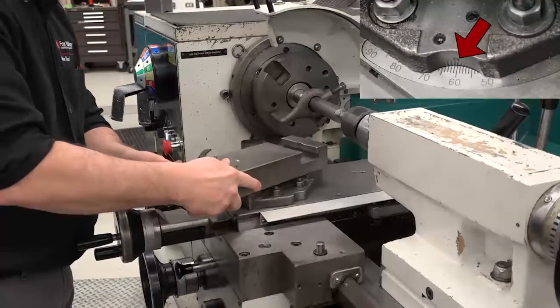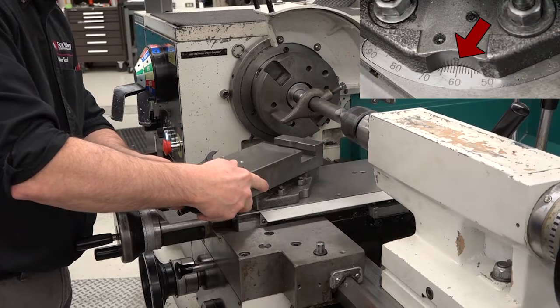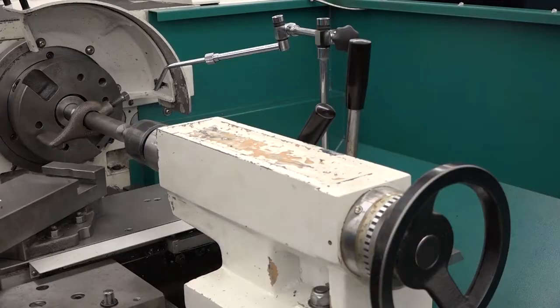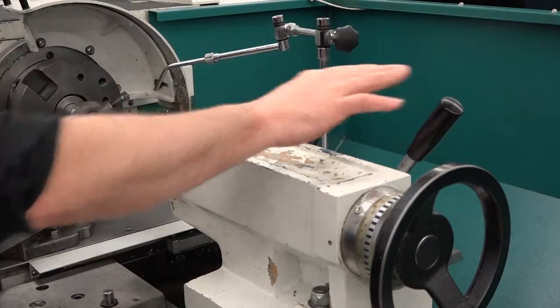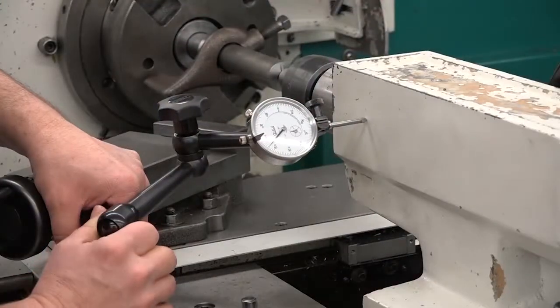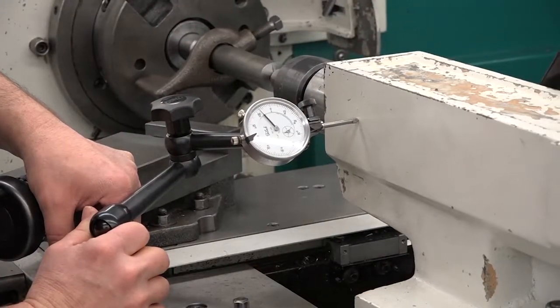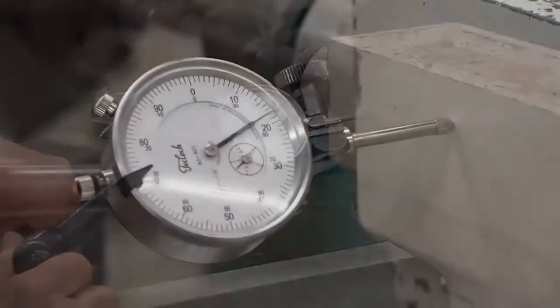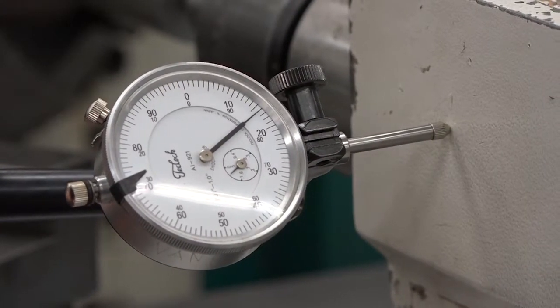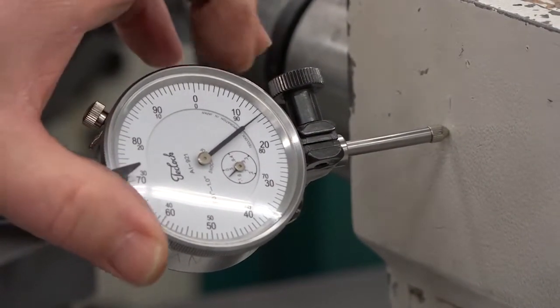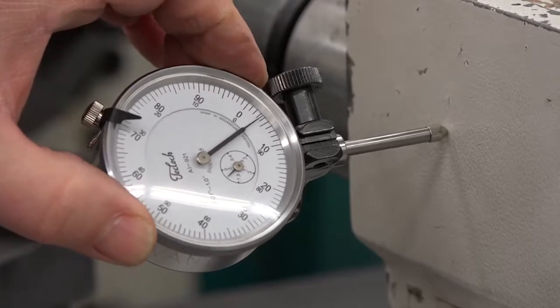Set the compound slide or rest 60 degrees to the right. Unlock the tailstock using the tailstock clamp lever. Make sure the indicator is on the tailstock and not on the workpiece. Load the indicator about 2 one-hundredths of an inch. Set the bezel to zero.